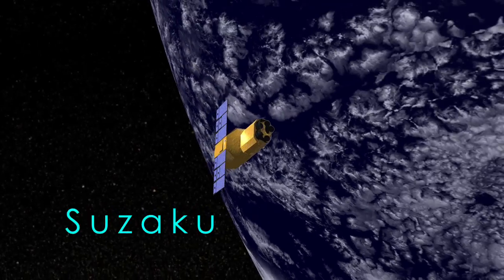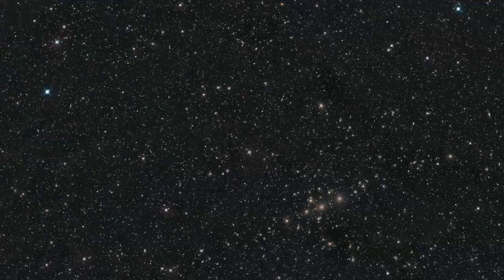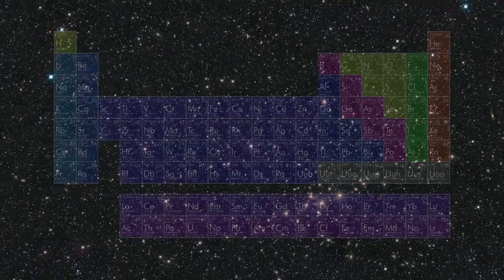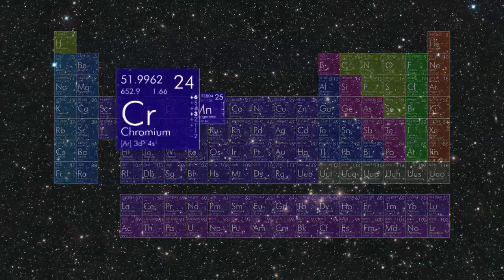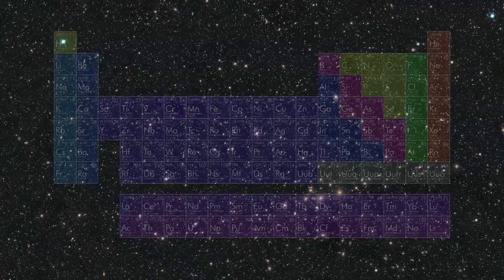Suzaku is an orbiting X-ray observatory operated jointly by NASA and the Japanese Space Agency. It recently spotted the metals chromium and manganese in intergalactic space for the first time. It's the largest known concentration of rare metals in the universe.